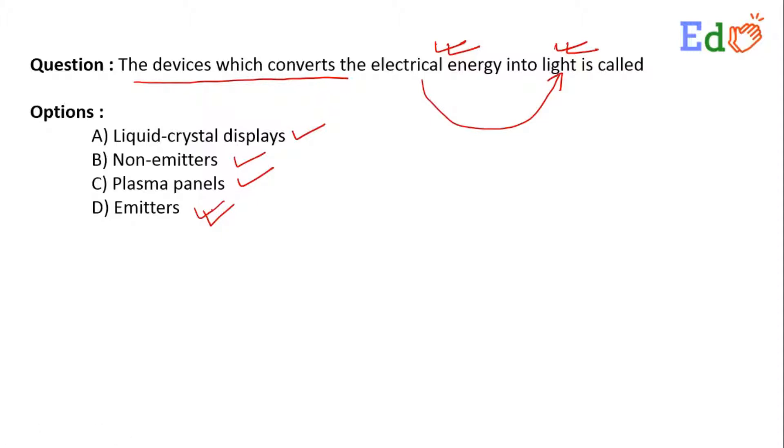So emissive displays are devices that convert electrical energy into light energy. We'll be going for option number D for this question.